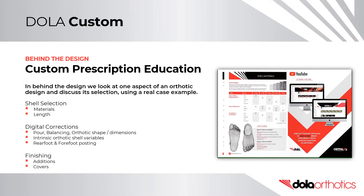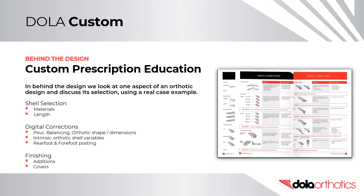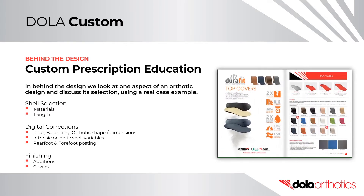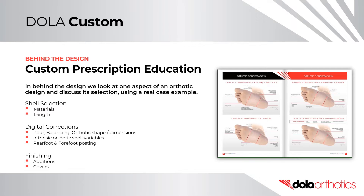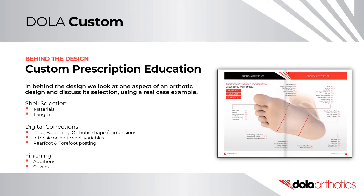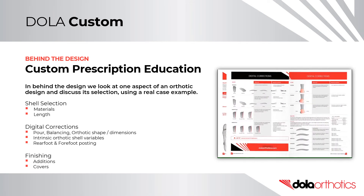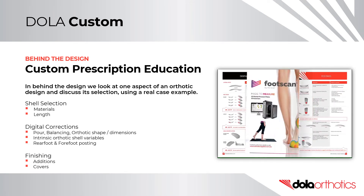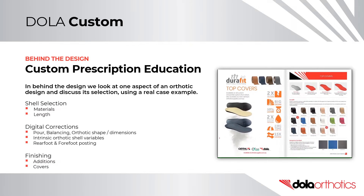In Behind the Design, we look at one aspect of an orthotic design and discuss its selection using a real case example. In the following series we will discuss shell selection including materials and lengths, digital corrections including pouring, balancing, orthotic shape and dimensions, intrinsic orthotic shell variables, rear foot posting and forefoot posting, and finishing including additions and covers.